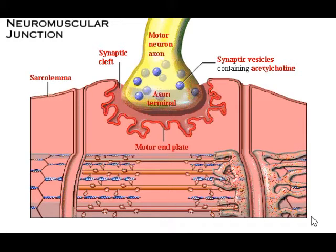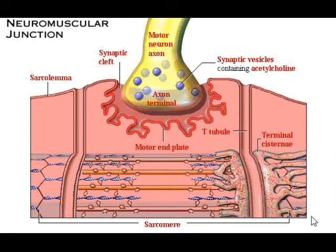Recall that the sarcolemma is the general name for the muscle cell membrane. The T-tubules are invaginations of the sarcolemma penetrating deep into the interior of the cell. The terminal cisternae are specialized regions of the sarcoplasmic reticulum that serve as reservoirs of calcium ions, shown here as red dots. Portions of the sarcoplasmic reticulum have been removed here in order to see the underlying structures. The sarcomere is the contractile unit of the muscle cell that extends from one Z-line to the next.